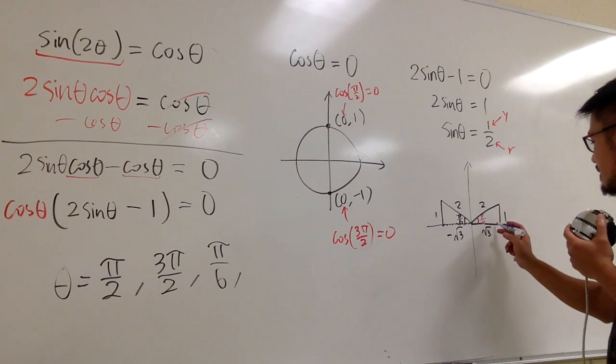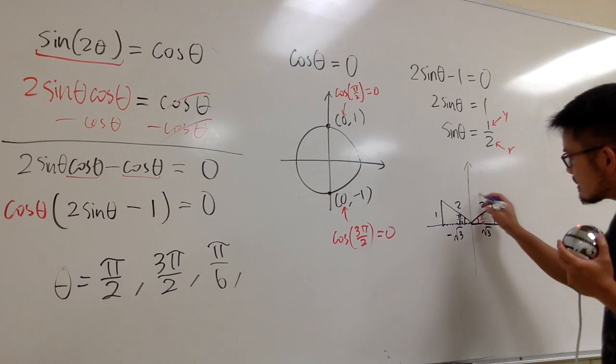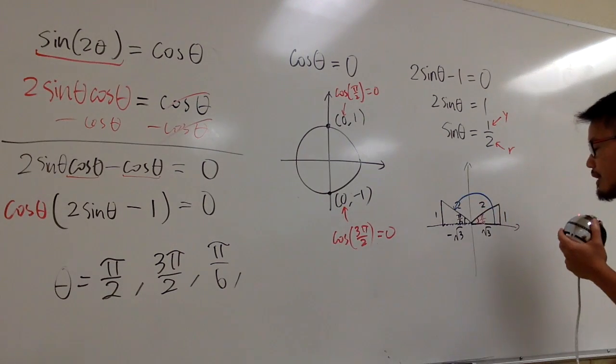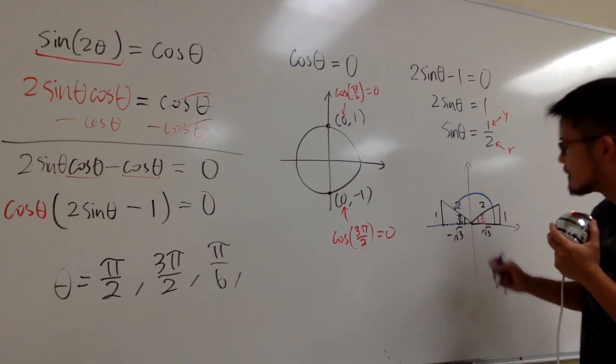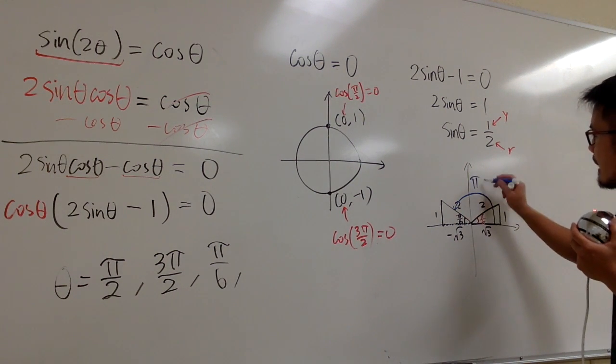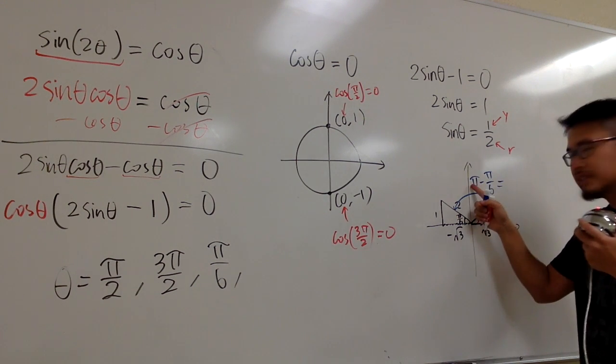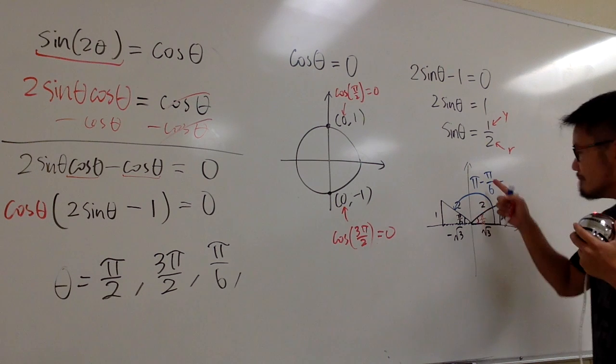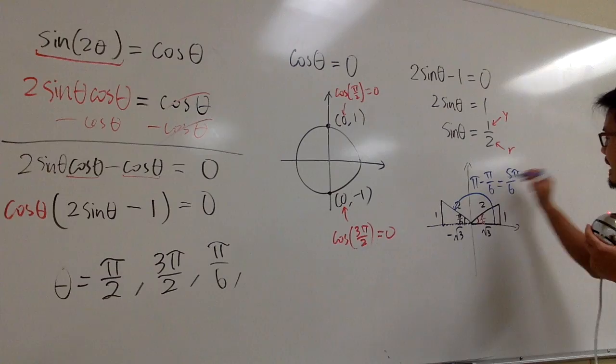But then, how do we get the answer that we want? Going from here, the positive x-axis, going from the positive x-axis, and then you count. I rotate to here. We know the whole thing is π, but I don't want to have this π over 6 right here, so we do π minus π over 6. So how do we do this? This is like 6 over 6 minus 1 over 6. So we have 5 over 6, and we can put a π on the top. And that's the last answer, 5π over 6.